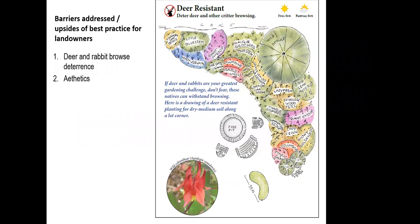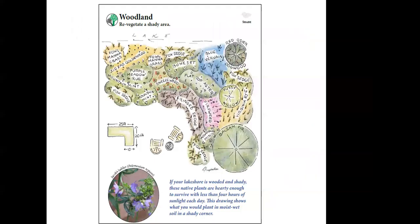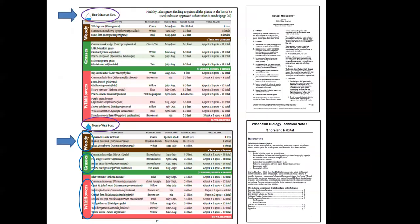The deer resistant option features plants that either have an odor or something about them that seems to keep deer and rabbits from hitting them as hard. The final option is woodland — more shade-tolerant species that can be utilized in a planting.